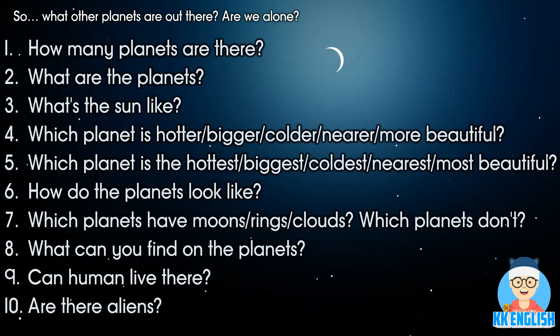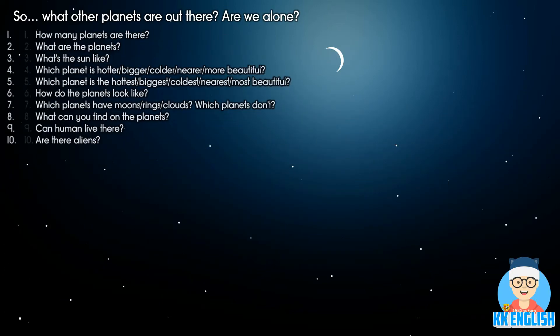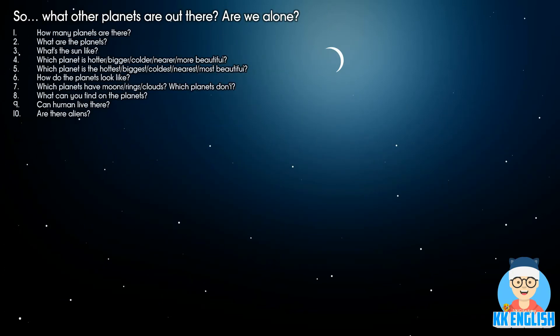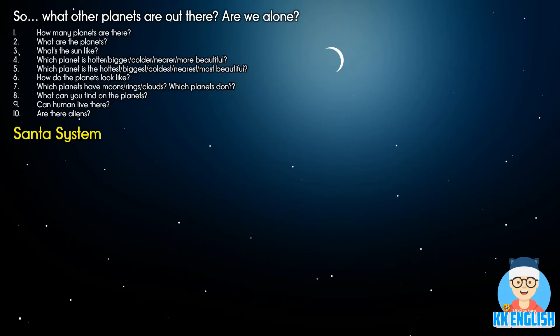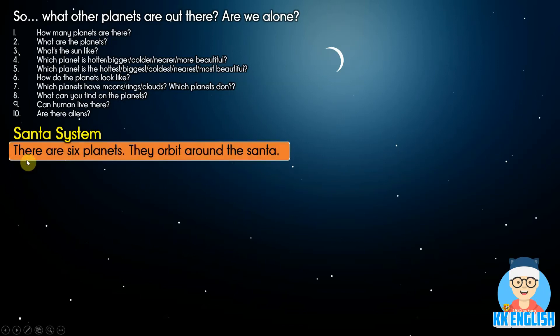Let's look at an example. If you have no idea where to start, let's think of a new system and name it 'The Santa System.' All right, question number one — how many planets are there? That's right: there are six planets.